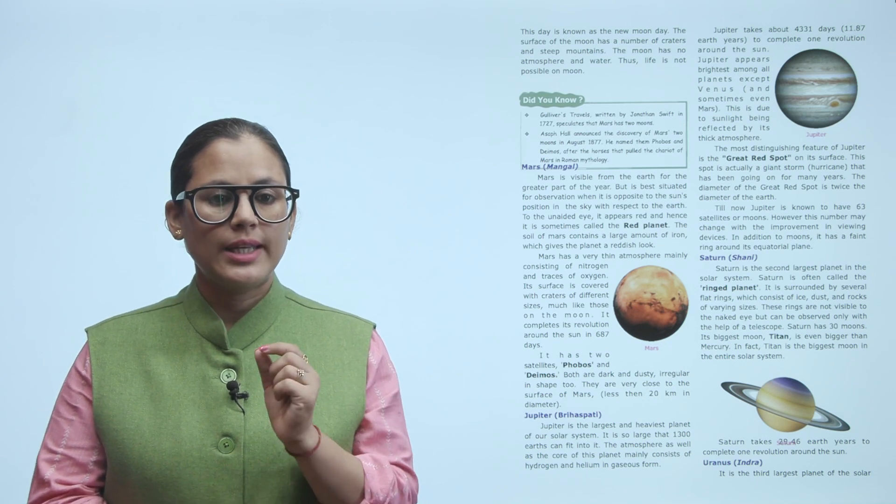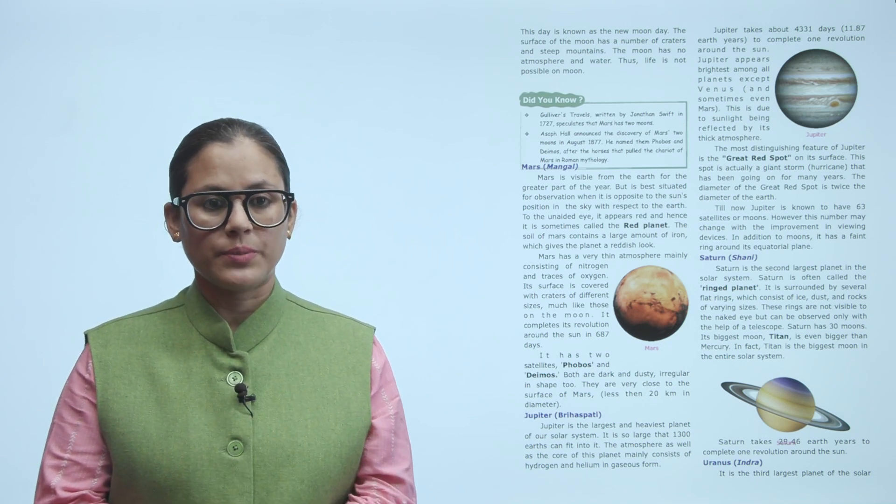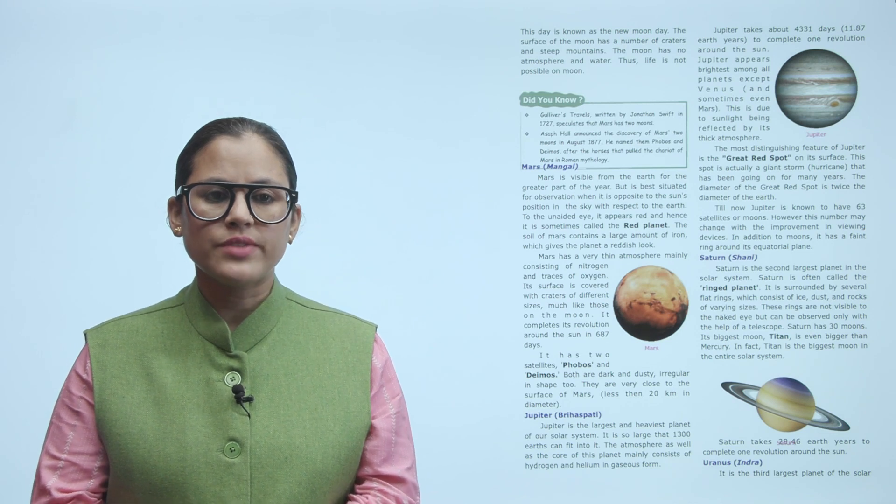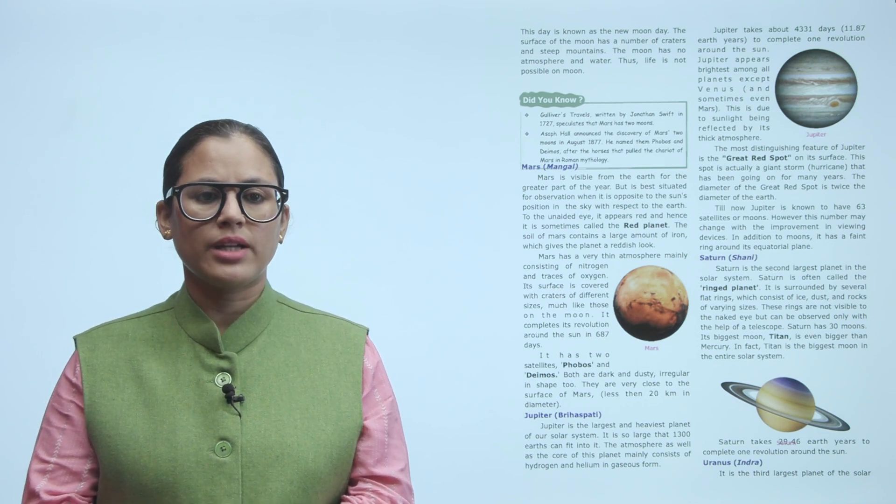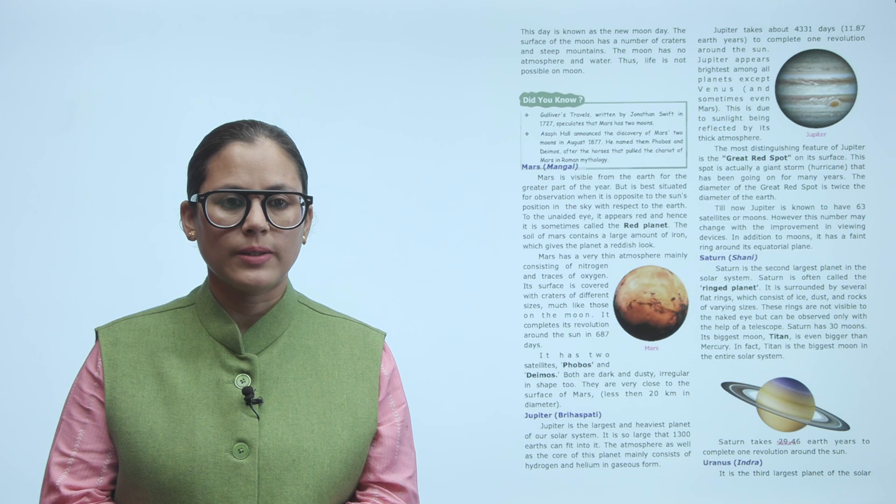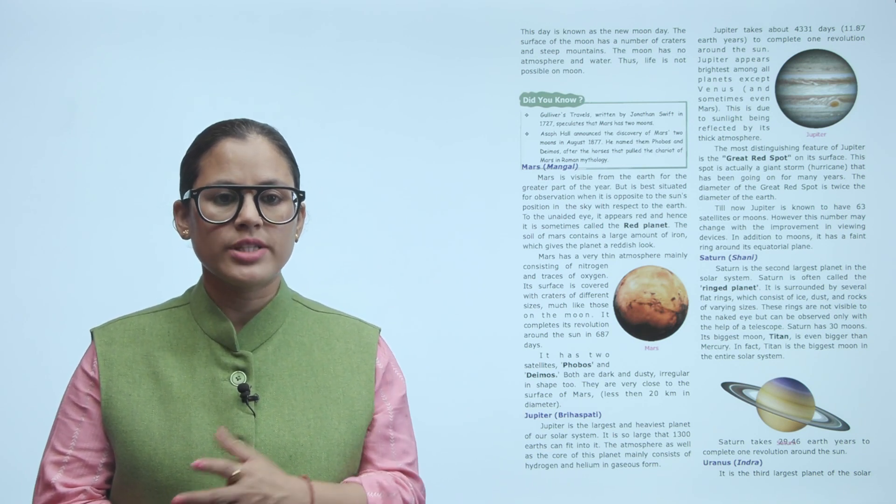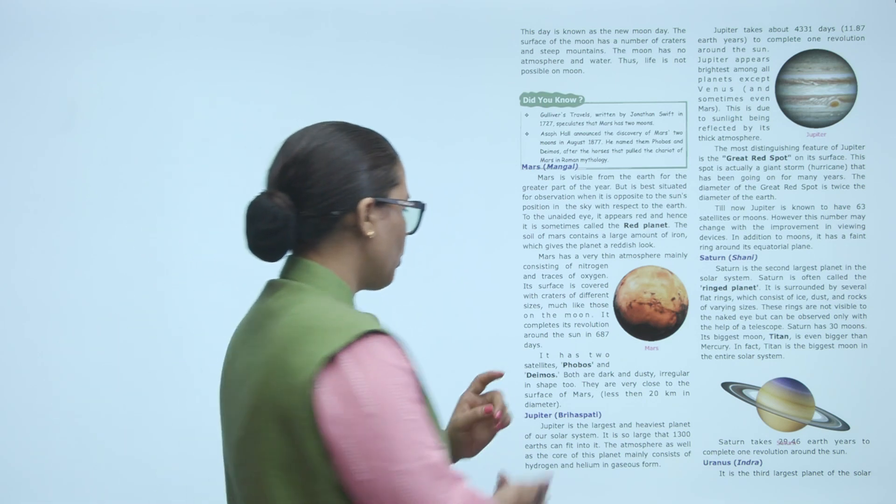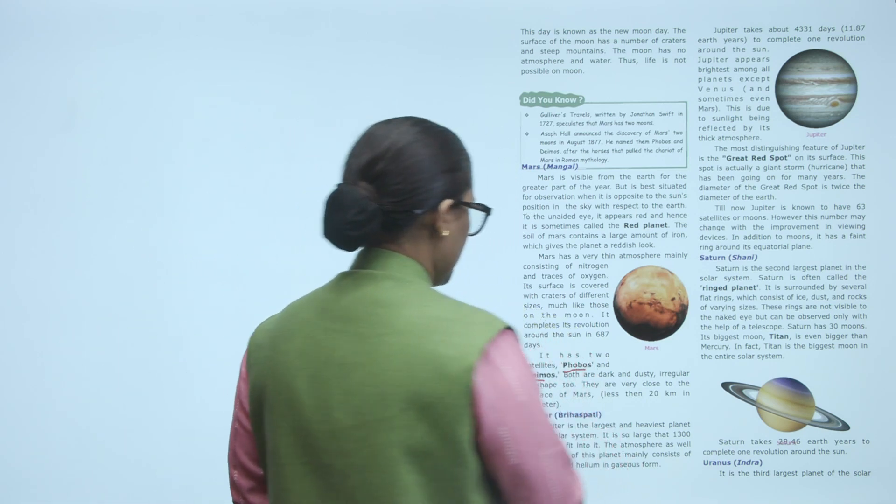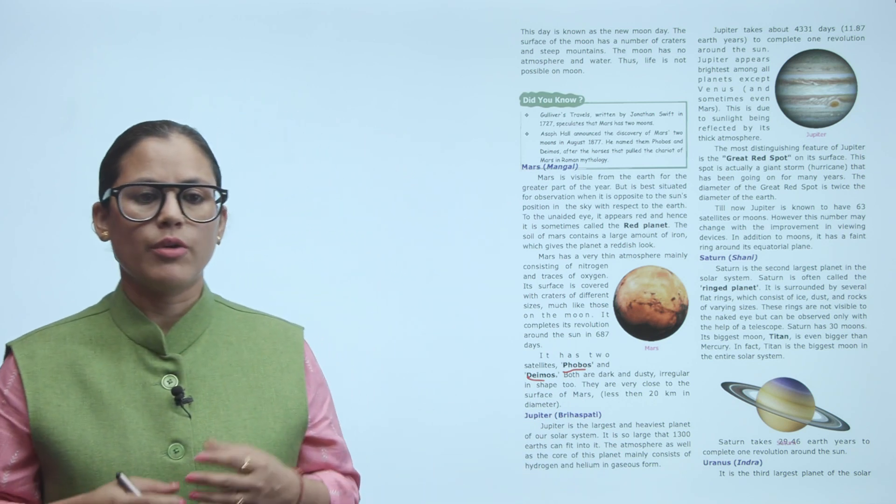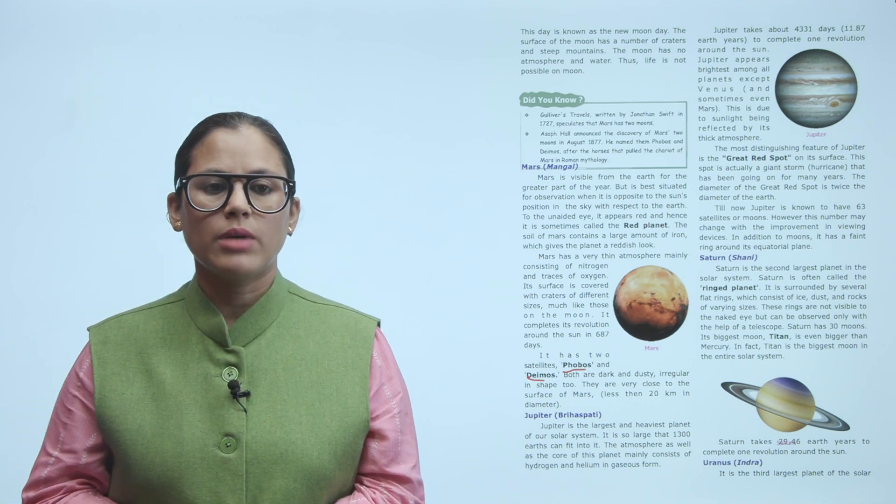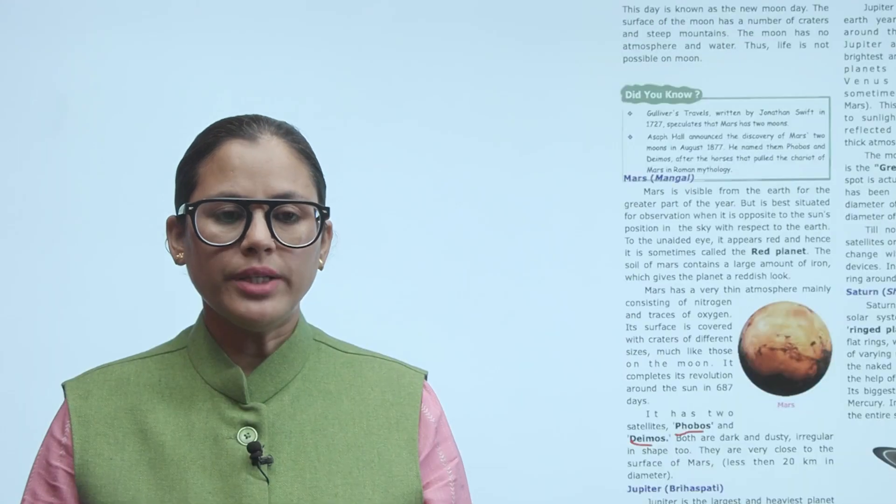Mars (Mangal): Mars is visible from the earth for the greater part of the year. To the unaided eye it appears red, and hence it is sometimes called the red planet. The soil of Mars contains a large amount of iron which gives the planet a reddish look. Mars has a very thin atmosphere mainly consisting of nitrogen and traces of oxygen. Its surface is covered with craters of different sizes, much like those on the moon. It completes its revolution around the sun in 687 days. It has two satellites, Phobos and Deimos. Both are dark and dusty, irregular in shape, and very close to the surface of Mars, less than 20 kilometers in diameter.